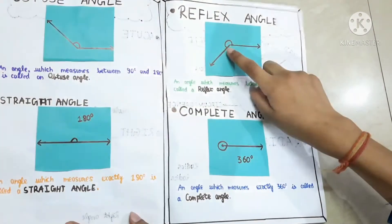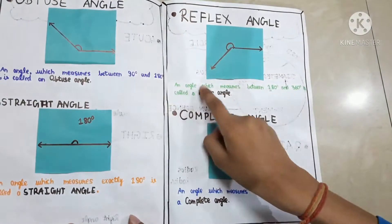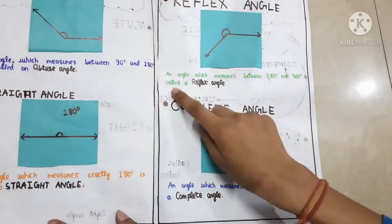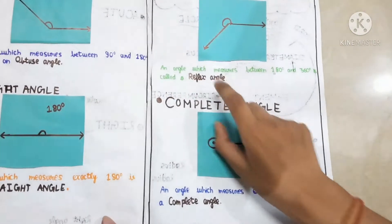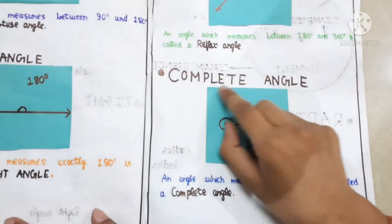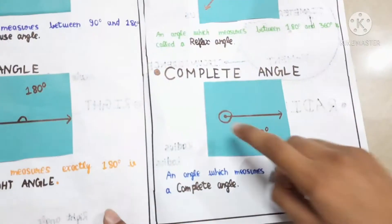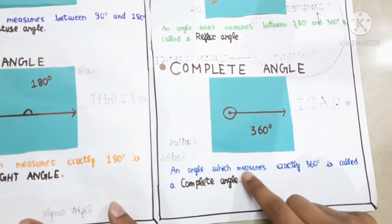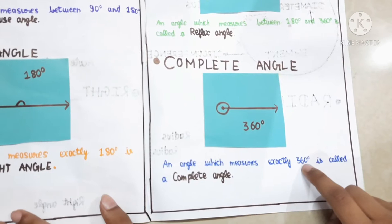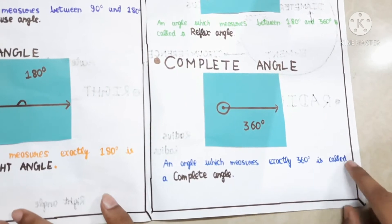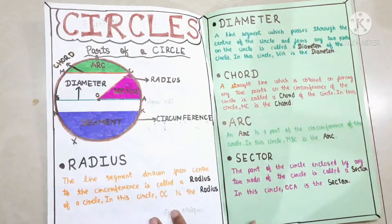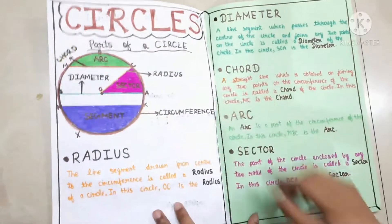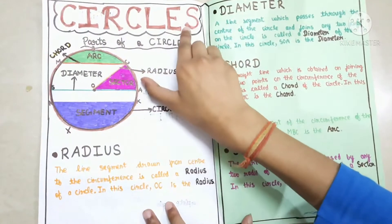Reflex angle: this is reflex angle. An angle which measures between 180 degrees and 360 degrees is called a reflex angle. Complete angle: this is complete angle. An angle which measures exactly 360 degrees is called a complete angle.